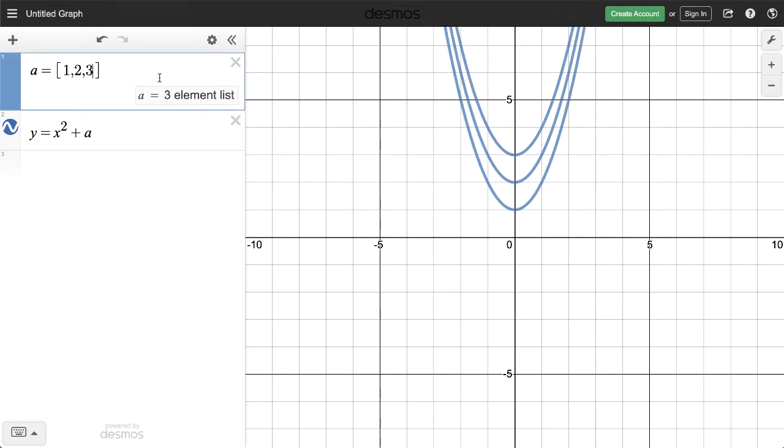Desmos creates a graph for each value in list a, and if you make an adjustment to list a, you automatically get the new results in the coordinate plane.